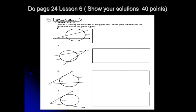For your assignment, do page 24, Lesson 6 — 10 points each, show your solution, for a total of 40 points. For number 4, one of the intercepted arcs is 120 degrees. Remember that the degree measure of a circle is always 360 degrees, so subtract 120 degrees from 360 degrees to obtain the measure of the other intercepted arc. That's all — thank you and have a good day.